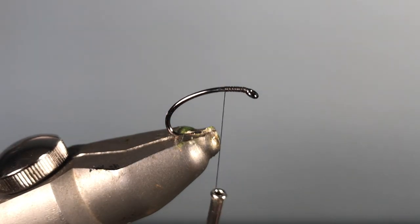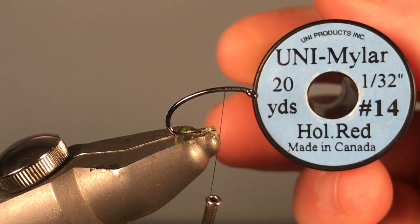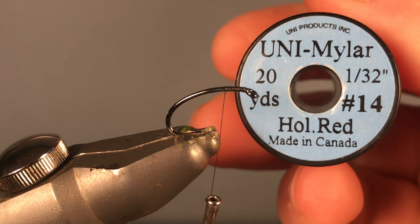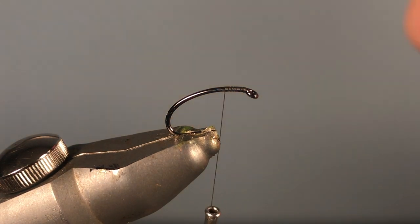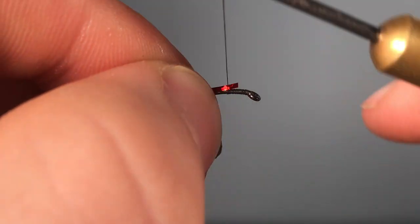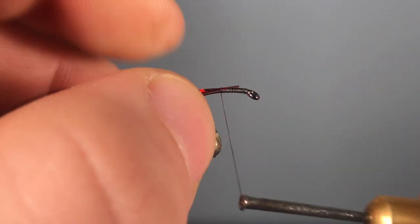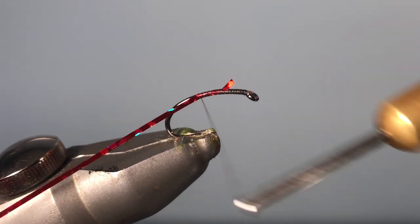And then what we want to do here is get our mylar tinsel, and this is from Uni Products in red in the hashtag 14 size. What you need to do is snip off around a 10 centimeter piece and then tie that into the side of the hook like so. Then bring that thread all the way down the hook like so to around there.